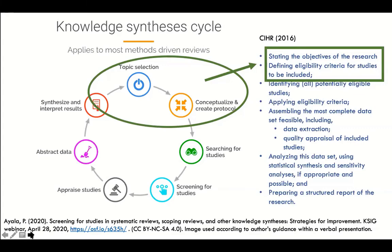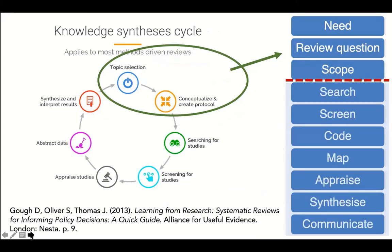This is something that you can take a look at later as well. And here's another great resource — Gail Oliver and Thomas — the Systematic Review for Policy Decisions Quick Guide, which is available freely and is listed as one of the resources. So we're really looking at the first three steps today.